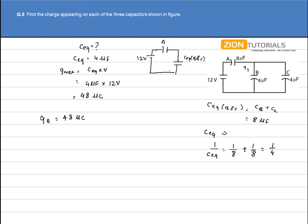Now the 48μC that appears on the C equivalent B and C will be distributed on B and C with respect to their voltage. Since the voltage on both B and C will be same, the charge appearing on them can be calculated by QB equals capacitance of B into voltage.